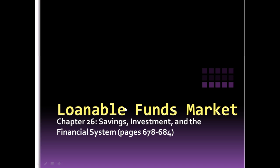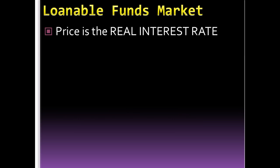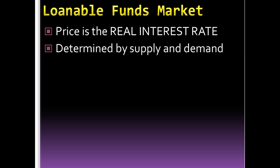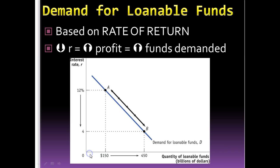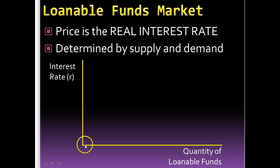The next thing we want to look at is the loanable funds market — that's the market for loans. All that information is in Chapter 26 of your textbook. In the loanable funds market, the price of loans is the real interest rate, which incorporates the idea of inflation. Like every other market in economics, the interest rate will be determined by supply and demand. On the graph, interest rates go on the vertical axis and the quantity of loanable funds on the horizontal.